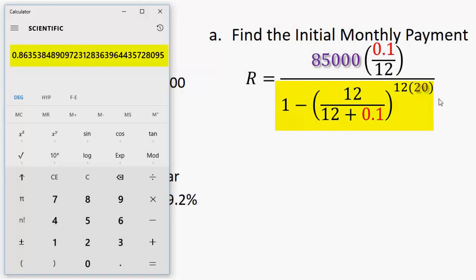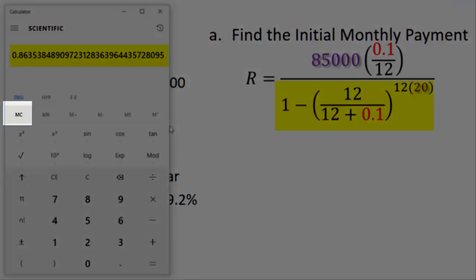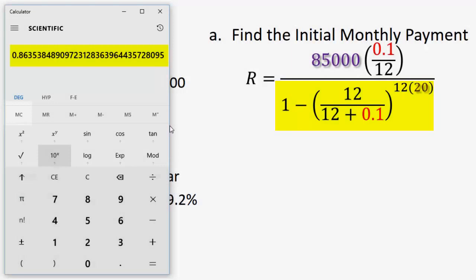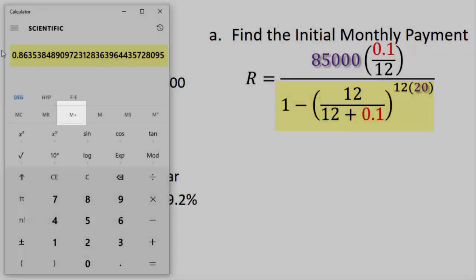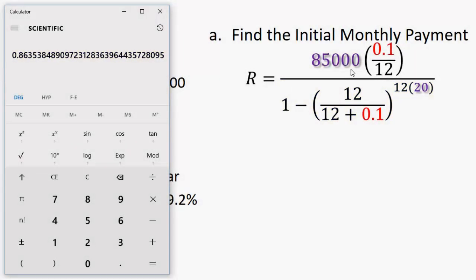This is the whole denominator. Now I'm going to clear out the old memory. I'm going to add in memory plus. I'm going to add in this whole denominator value. Now I'm going to go ahead and calculate the numerator and then divide it by that value by recalling it from the memory.